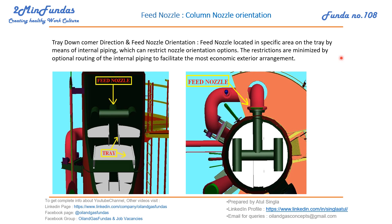The restrictions are minimized by optional routing of internal piping to facilitate the most economical exterior arrangement. This arrangement should be economical, and we can always discuss with the vendor and ask for internal piping so that the vendor requirement of flowing the fluid onto the tray is fulfilled. The feed nozzle is a very critical nozzle.